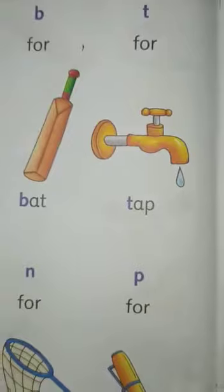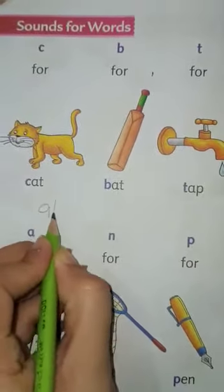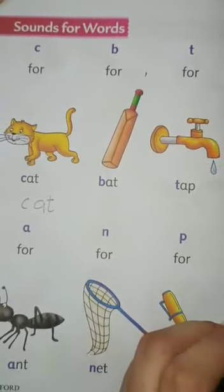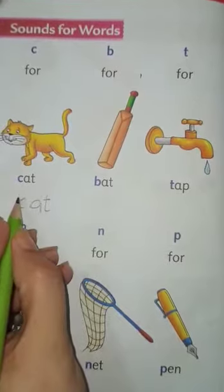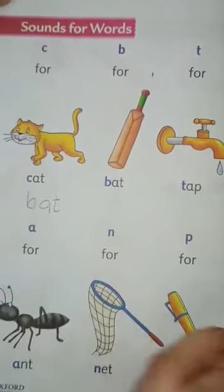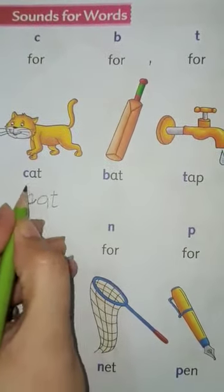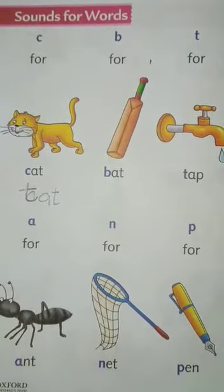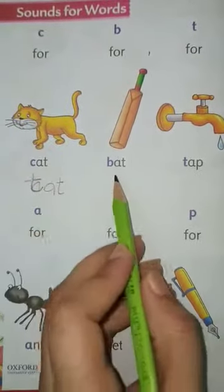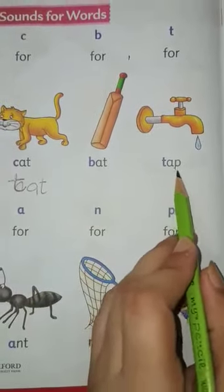Here, with A and T, if you write C it becomes Cat. When we write B, it becomes Bat. When we write T, it becomes Tab. C, A, T — Cat. B, A, T — Bat. T, A, P — Tab.